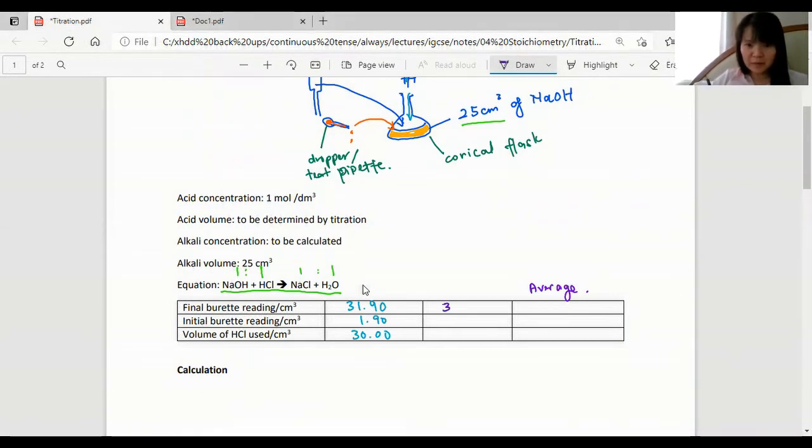Let's say we repeat the experiment and got 31.5 as the final reading and the initial reading was 1.5. So the volume of HCl used is 30 again.